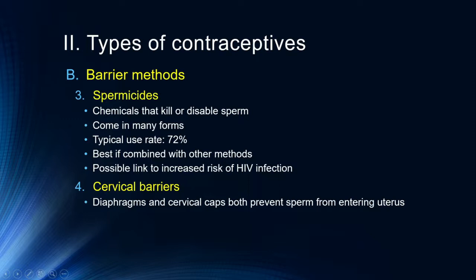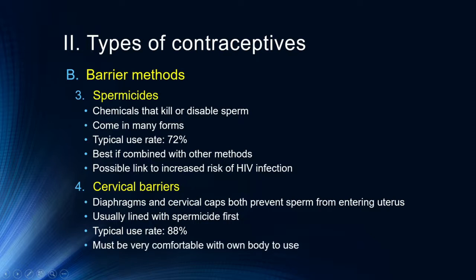There are also cervical barriers, including diaphragms and cervical caps, that both prevent sperm from entering the uterus. These are often used in combination with spermicides, and their typical use rate is about 88%. These can be awkward or difficult to use — you have to be pretty comfortable with your own body to get them inserted correctly. The Today Sponge was another version, but it was taken off the market due to toxic shock syndrome concerns, so these cannot be left in. For a good giggle, there's a great episode of the sitcom Seinfeld based entirely on the Today Sponge.